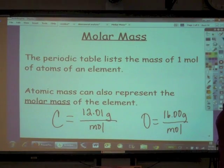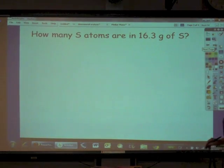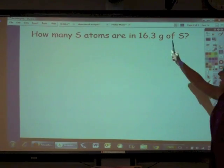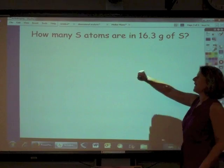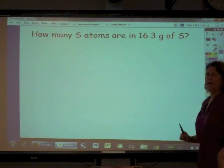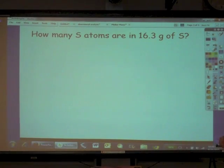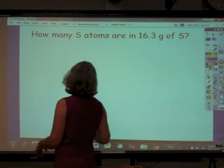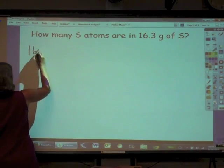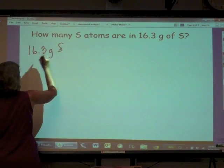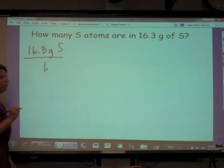So let's do a problem. How many sulfur atoms are in 16.3 grams of sulfur? So now we are going to use mass to count how many, and our conversion is going to be molar mass. We're going to begin with what we're given, and that is 16.3 grams of sulfur, and that's going to go in our numerator.